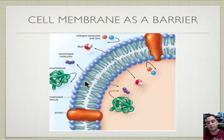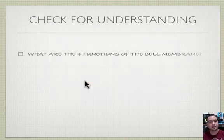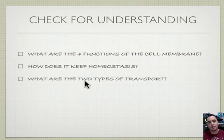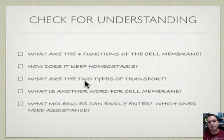Check for understanding: What are the four functions of the cell membrane? How does it keep homeostasis? What are the two types of transport? What is another word for cell membrane? Which molecules can easily enter, and which ones need assistance?